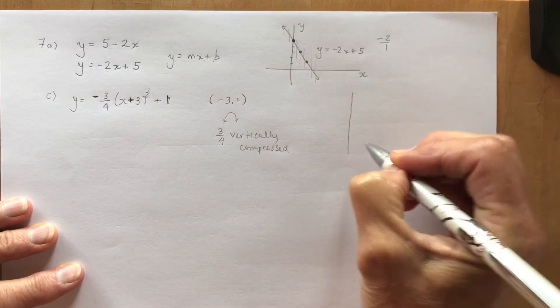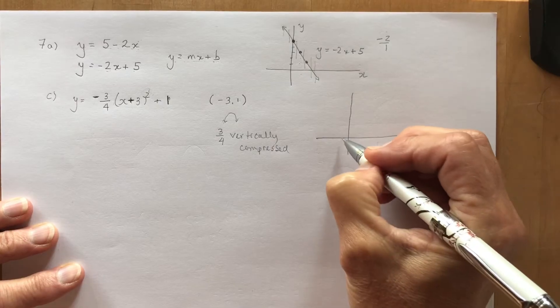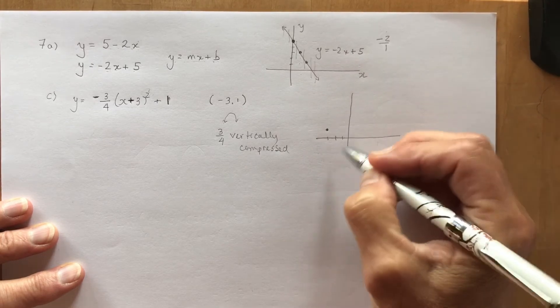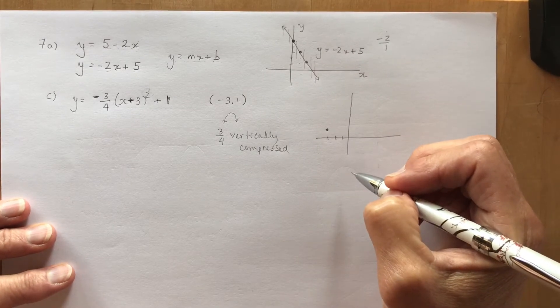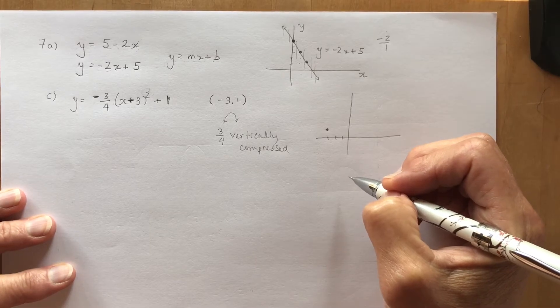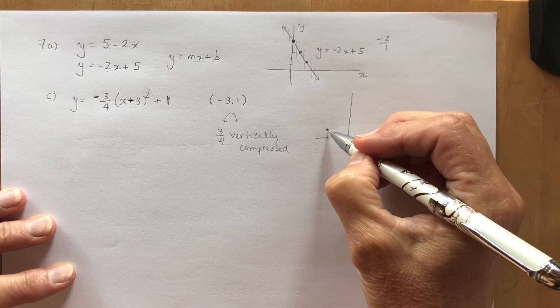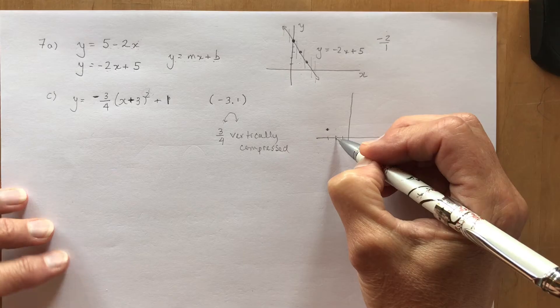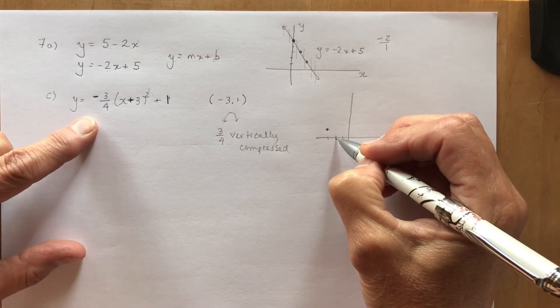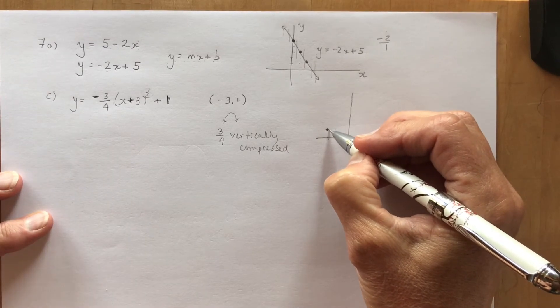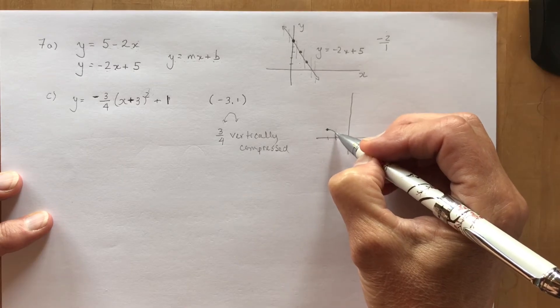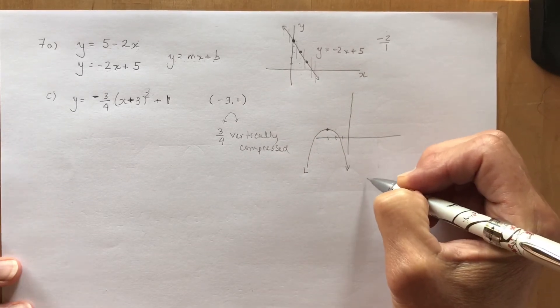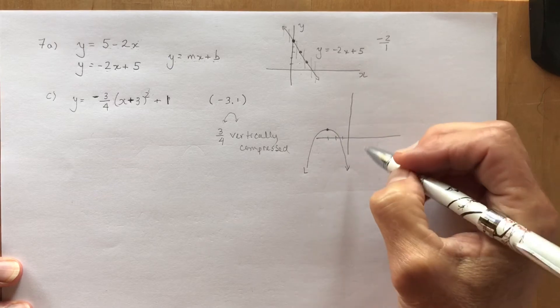So making a quick sketch of this, all I have to do is find the vertex minus 3 and 1 right here. It's not important that I know where the x-intercepts are. The question just asked me to sketch the function and do a vertical line test on it. So a regular parabola meaning y equals x squared would go over 1 down 1, but this one because it's minus 3 quarters it's going to be a little flatter.